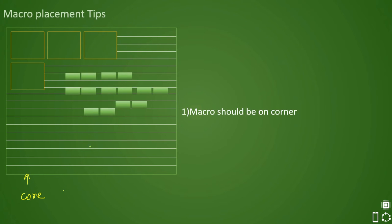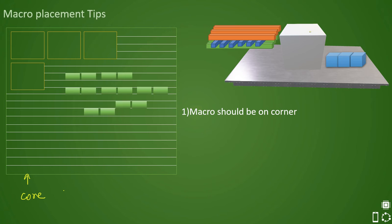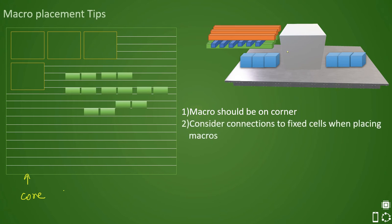The first rule was that macros should be placed on corners. If you place them in the center, there will be a detour and you will face routing issues. If this is your macro and the blue colored ones are standard cells on both sides, when they want to communicate the routing resources will have to detour around the macros.